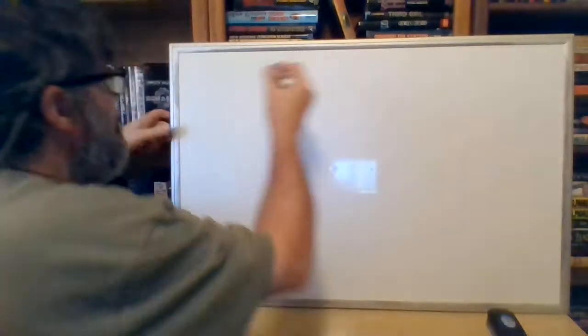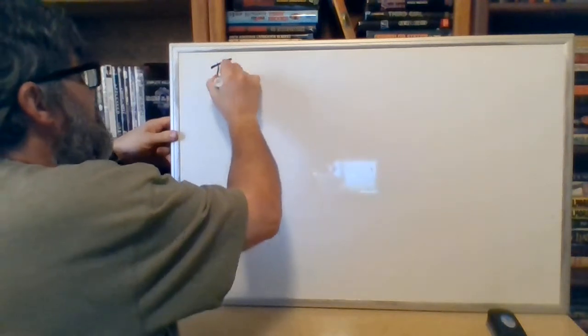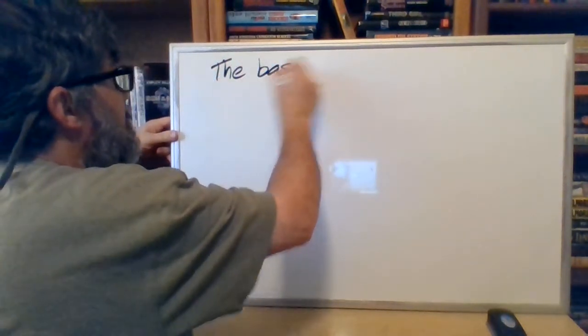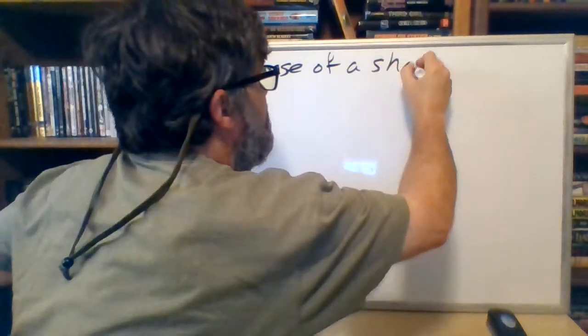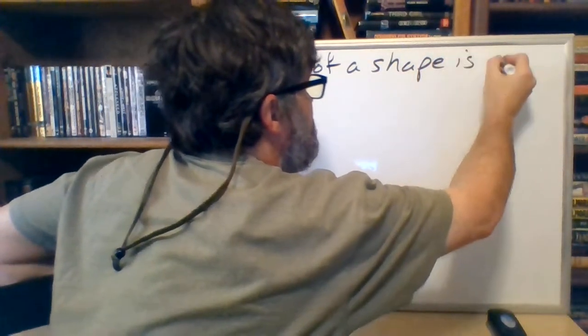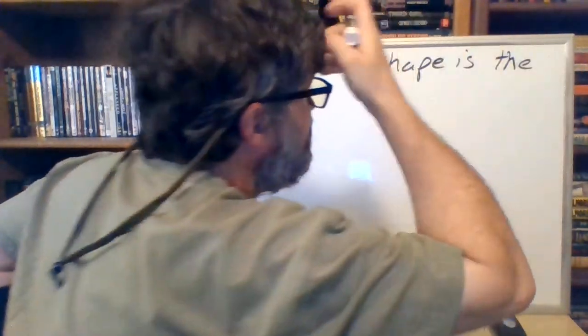All right, so I'm going to say the base of a shape is... shall we make it the unit circle? Nah, it's just a circle.